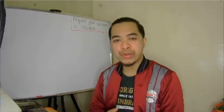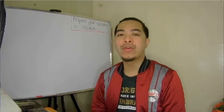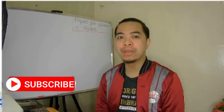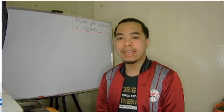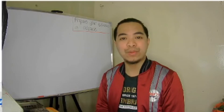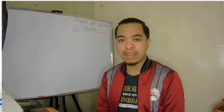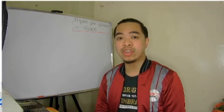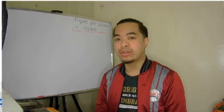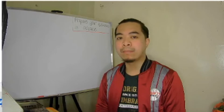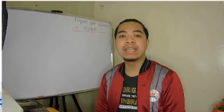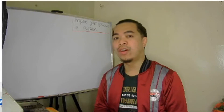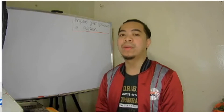Hello again, welcome to the third episode of how to use graph software. In this presentation, I'm going to talk about how to graph not a function this time, but a relation. Remember that the main difference of a function from a general relation can be seen in their graph, and based on the graph, we can use the vertical line test to tell whether that relation is a function or a mere relation.